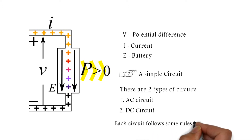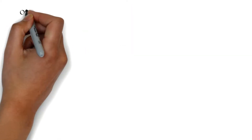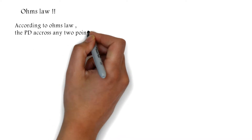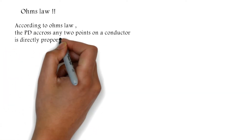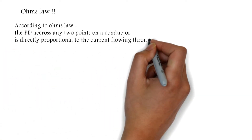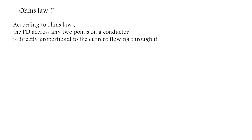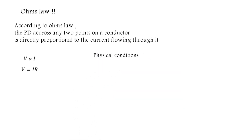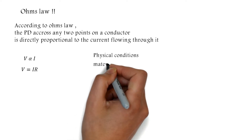Each circuit follows some rules. The first one is Ohm's Law. According to Ohm's Law, the potential difference across any two points on a conductor is directly proportional to the current flowing through it — V is directly proportional to I, and V equals IR, where R is the resistance.